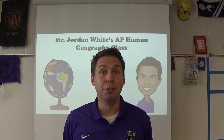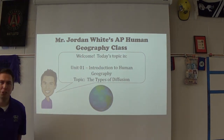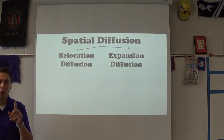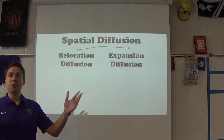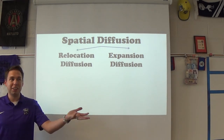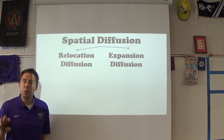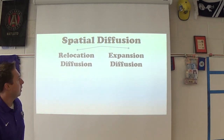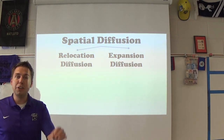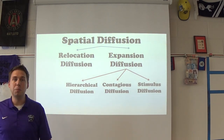Today's topic is diffusion. You'll notice there are lots of types of diffusion. What you need to understand is that all diffusion means is things are moving — whether it's an idea, an actual object, or animals or people. That's diffusion: moving something from here to there. There are two major types: relocation and expansion. Expansion has three subsets: hierarchical, contagious, and stimulus.